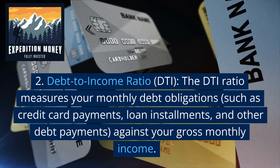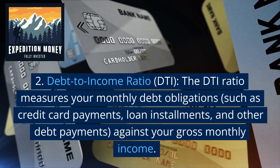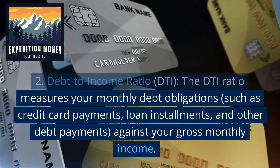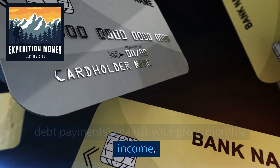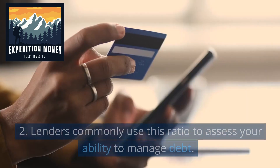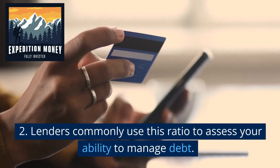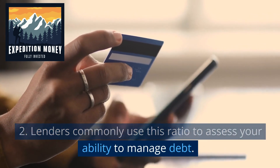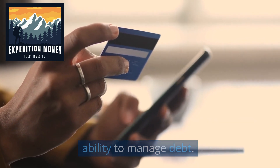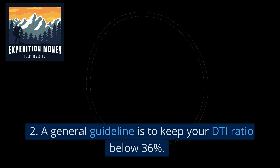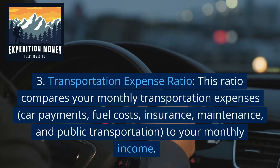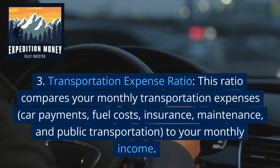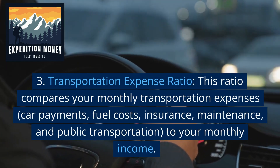Debt to Income Ratio. The DTI ratio measures your monthly debt obligations against your gross monthly income. Lenders commonly use this ratio to assess your ability to manage debt. A general guideline is to keep your DTI ratio below 36%.